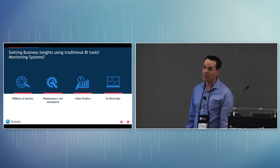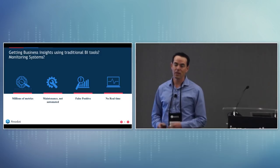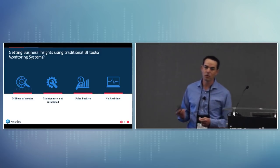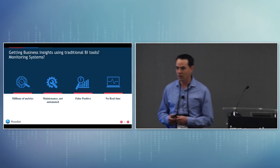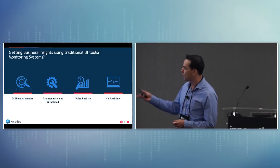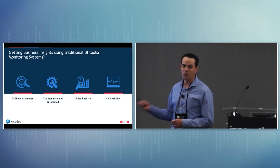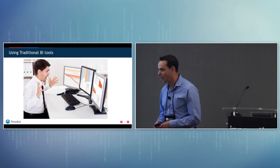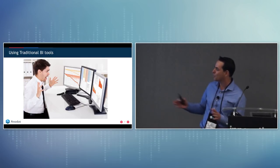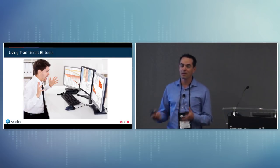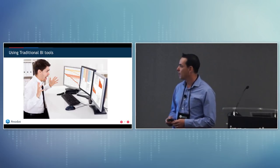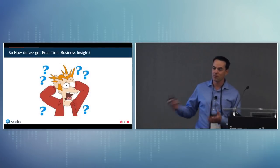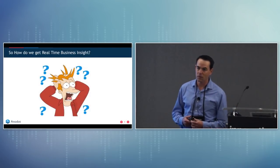The fourth problem is no real-time. After all of that, you end up with a system that gives you reports every hour or every day — but not the actual real-time insight you need. So we see four problems with traditional BI systems, and you end up like the person looking at many screens trying to understand what's going on.